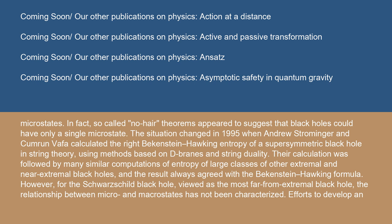The situation changed in 1995 when Andrew Strominger and Cumrun Vafa calculated the right Bekenstein-Hawking entropy of a supersymmetric black hole in string theory, using methods based on D-branes and string duality. Their calculation was followed by many similar computations of entropy of large classes of other extremal and near-extremal black holes, and the result always agreed with the Bekenstein-Hawking formula.